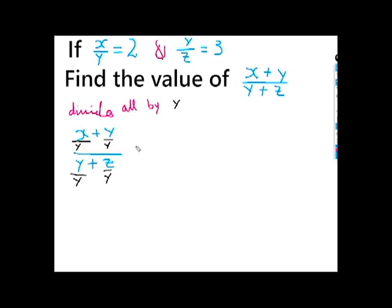So x over y... after dividing by y, we get x over y plus 1 over 1 plus z over y.